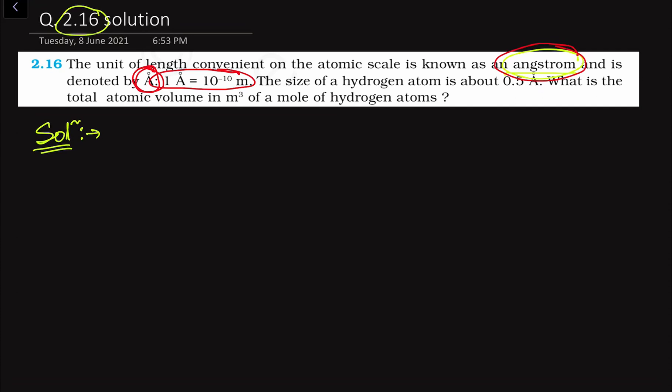The size of a hydrogen atom is 0.5 angstrom, which is the radius of the hydrogen atom. We have to find out the total volume in meter cube of one mole of hydrogen atoms.